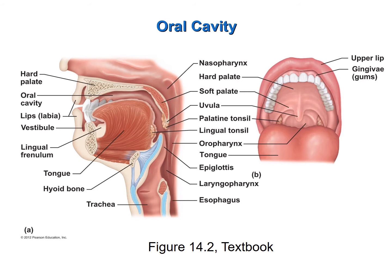I want to point out two lymphoid organs which are the tonsils. The palatine tonsils are on the posterior portion of the oral cavity, and the lingual tonsils are at the base of the tongue. Lingual refers to tongue, so if you remember base of the tongue — lingual tonsils. The palatine tonsils are close to the soft palate.